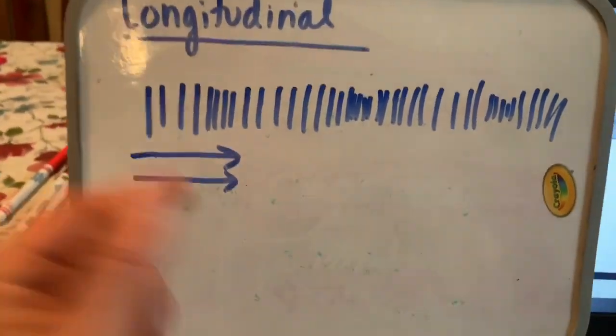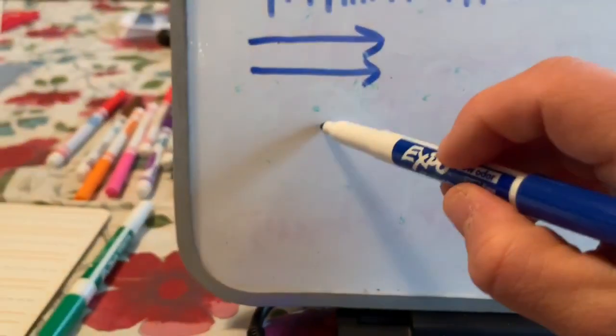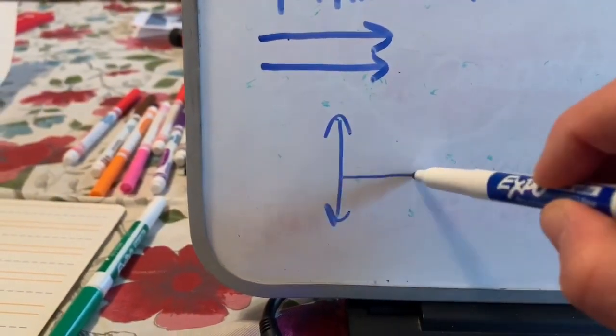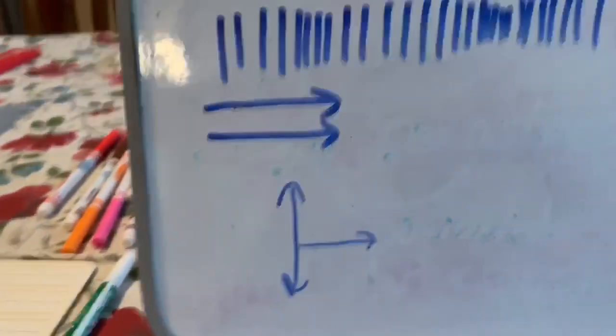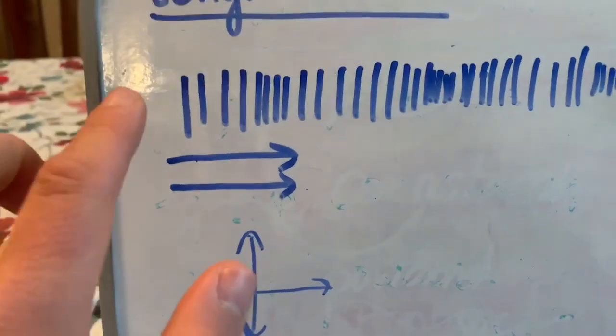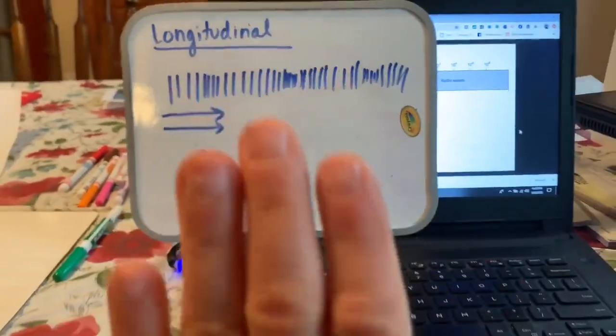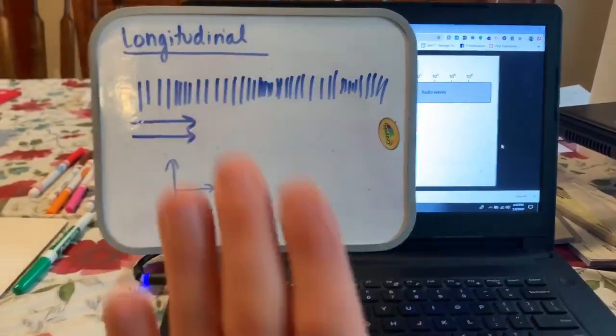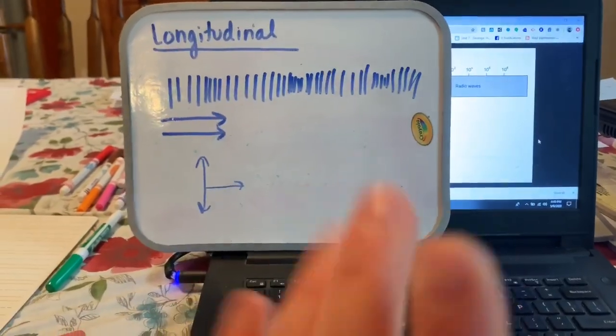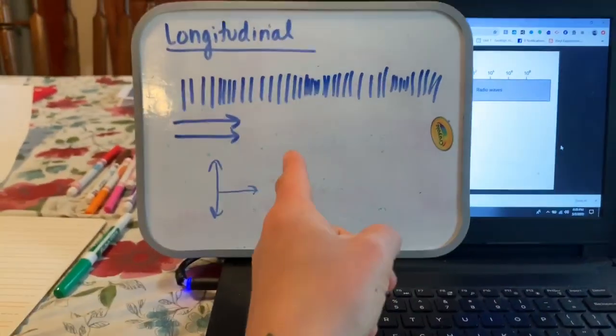The difference is, whereas before the disturbance was perpendicular to the way that the wave was moving, here they're in the same direction. If I were going to make a longitudinal wave, I might push forward that way. So that's the disturbance, but the wave would also go that way.